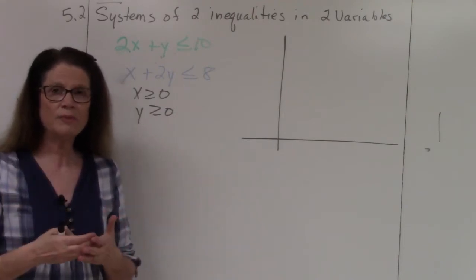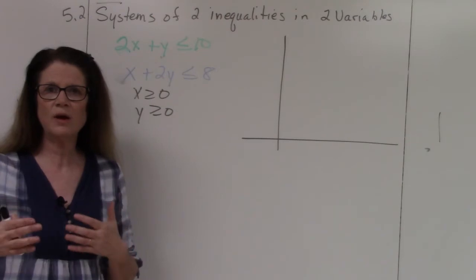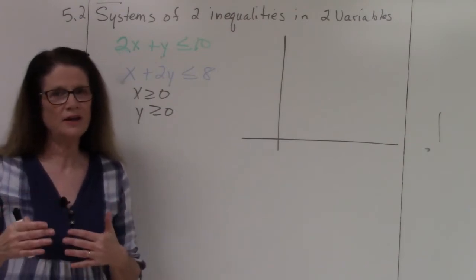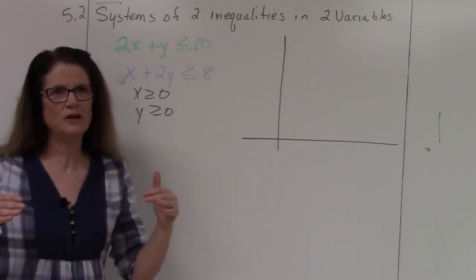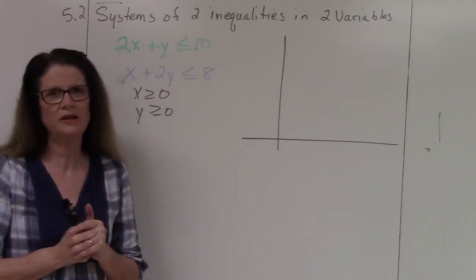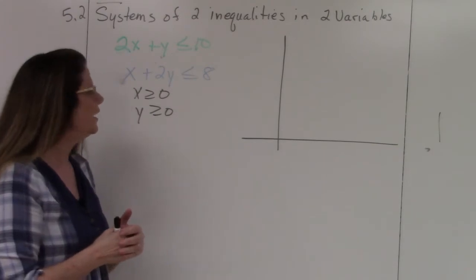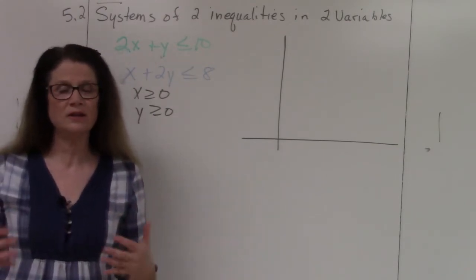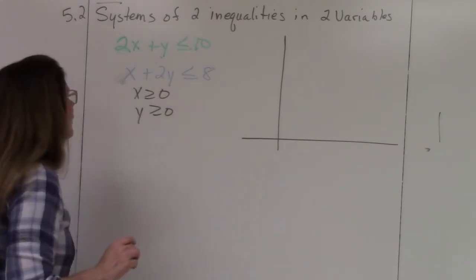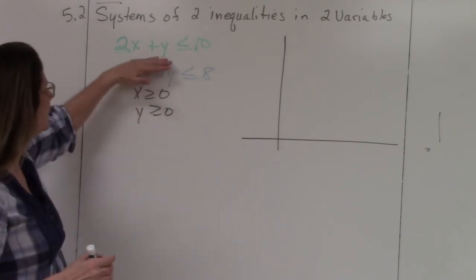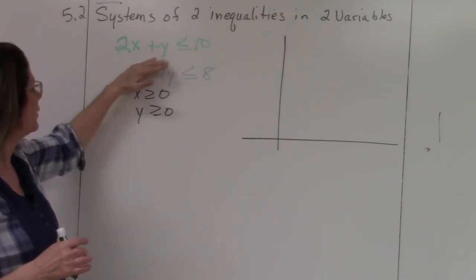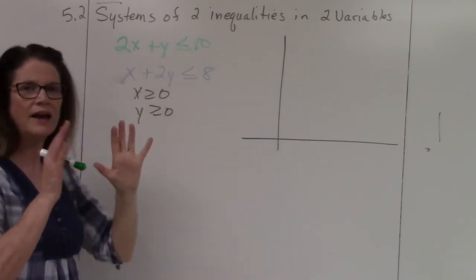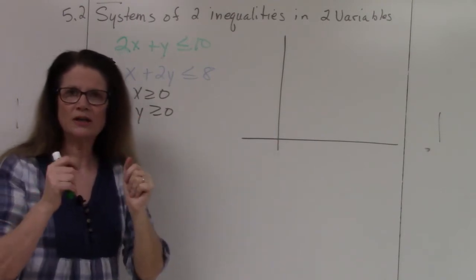Just like section 5.1, you're going to use the cover-up method to find the x and y intercepts, identify whether it's a solid line or a dotted line — meaning whether points are included in the solution set — and then shade. It's the exact same thing; now we're just doing it twice on the same graph.